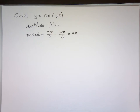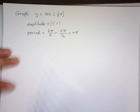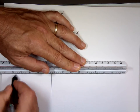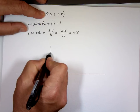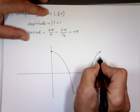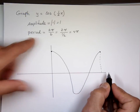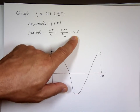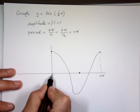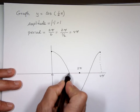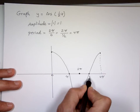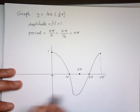Dividing by one half is the same as multiplying by two, so the period is 4π. I'm only going to graph one cycle. It's a cosine with no negative sign, so it starts high. Instead of taking 2π, it takes 4π to complete one full cycle. Halfway between zero and 4π is 2π, then π and 3π are the quarter points. It goes as high as 1 and as low as negative 1.